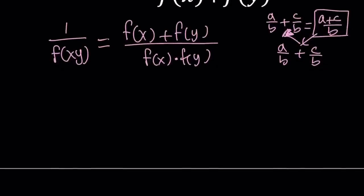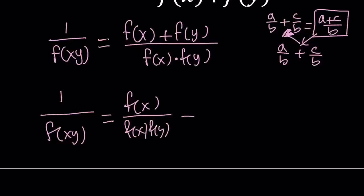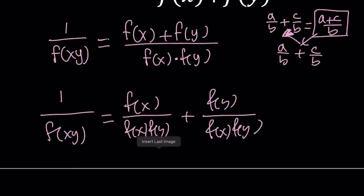So that's what we're going to do on the right hand side of this equation. So one over f of xy equals f of x over f of x f of y plus f of y over f of x times f of y. Now if you added these two fractions, because they have the same denominator, you would get this expression right here.